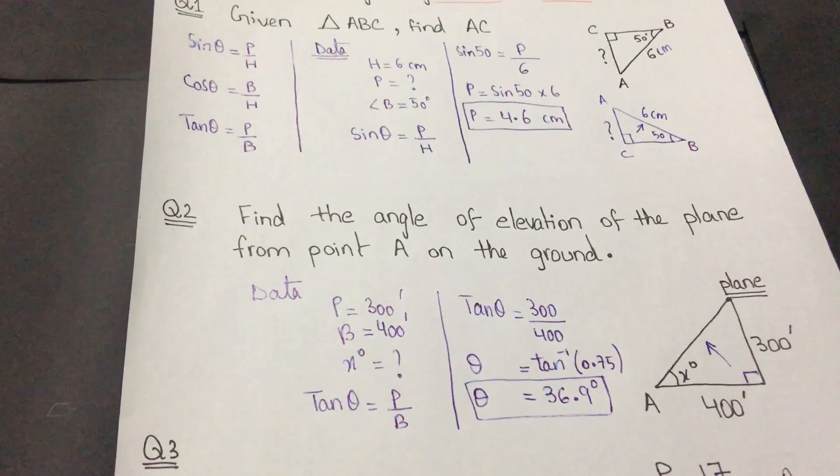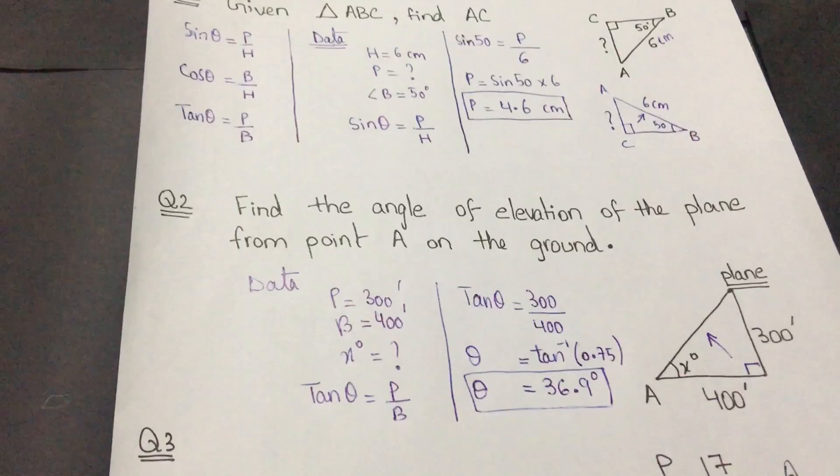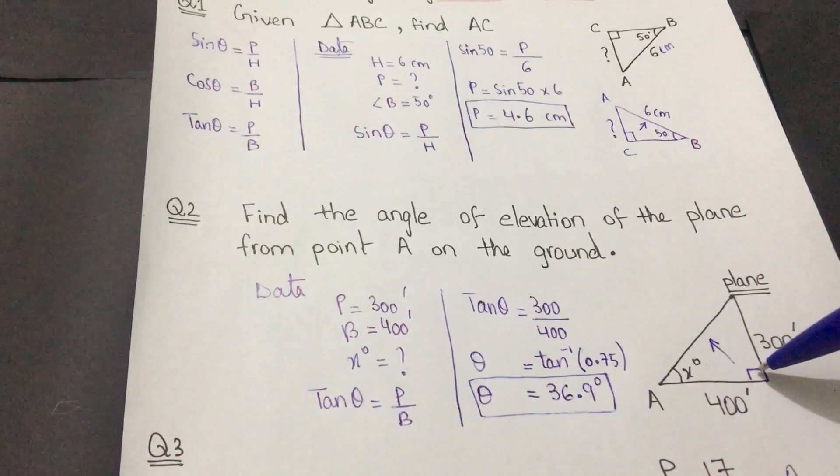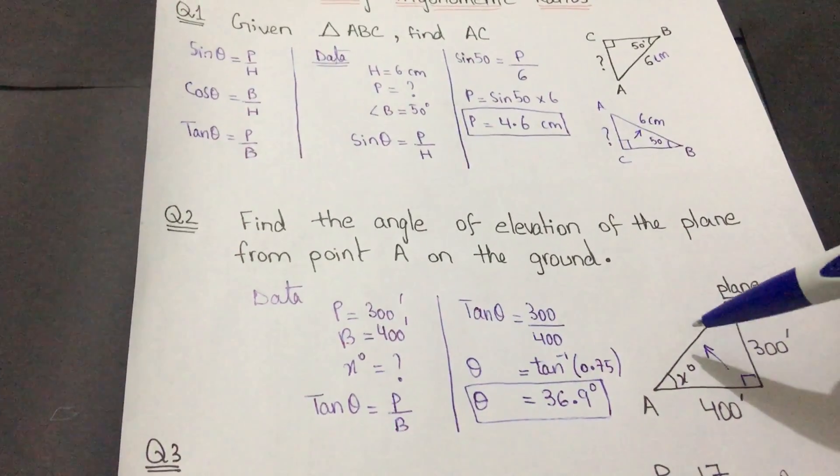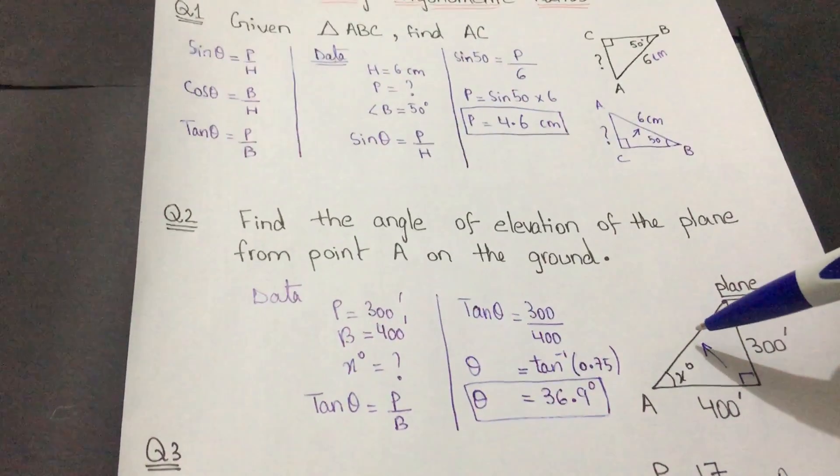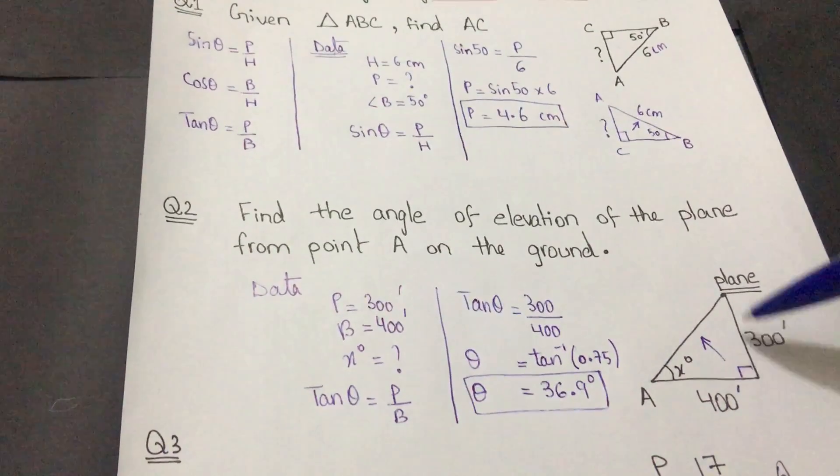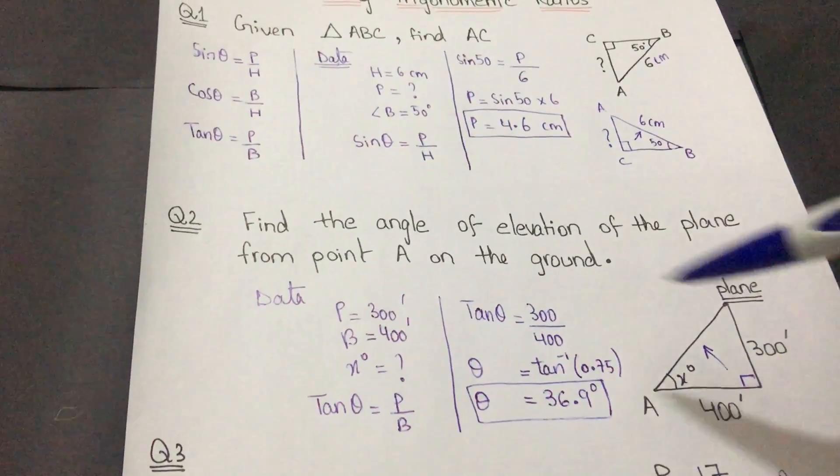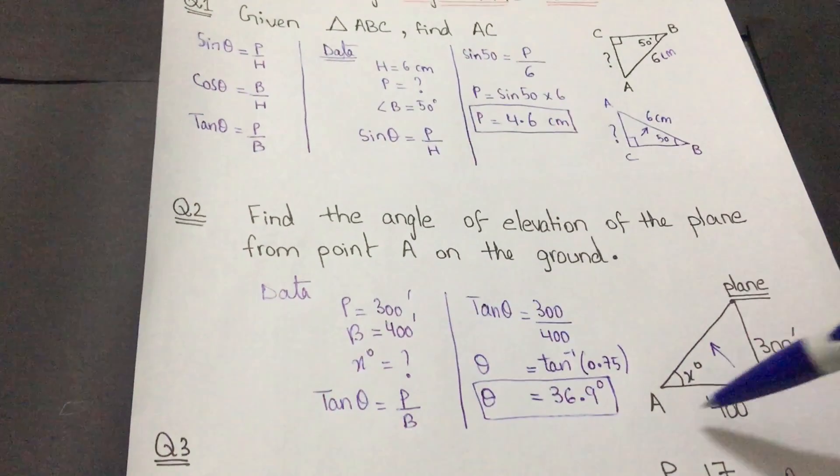The first important thing is that I have to write my data. This is the side opposite to the right angle, so this is my hypotenuse. The sides which are given to me are perpendicular and base. My perpendicular is 300 feet and my base is 400 feet.